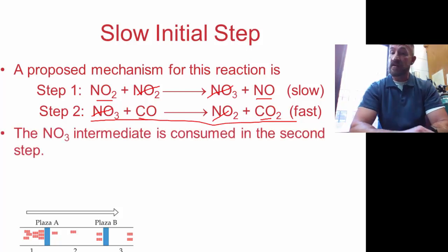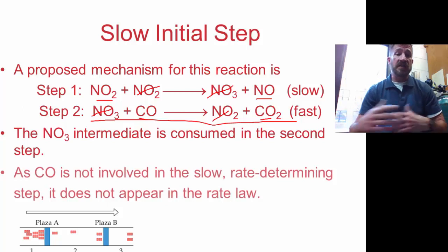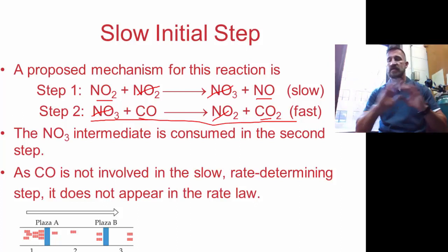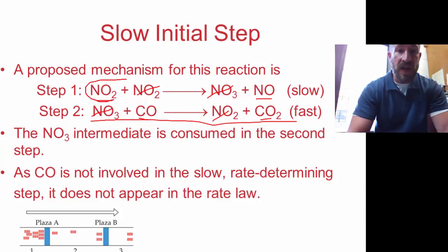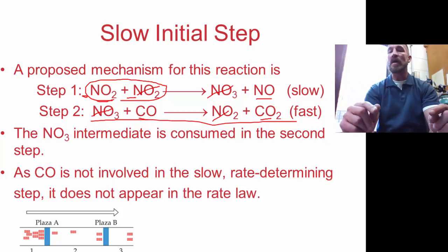NO₃ is what we call an intermediate. It's consumed in the second step. And carbon monoxide is not involved in the slow or rate determining step, so it doesn't appear in the rate law. Since we don't see carbon monoxide in that slow step, it's completely left out of the rate law. We really write the rate law for the slow step, and this is the only time you can use those coefficients in the equation. The rate law from this slow step - you just look at the reactants - would be rate equals K times NO₂ squared. And it's squared because there are two different nitrogen dioxides.